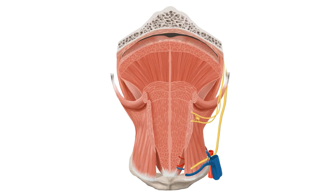Here we can see an anterior coronal view of the tongue. To give some context, we can see the hard palate here and the hyoid bone here.